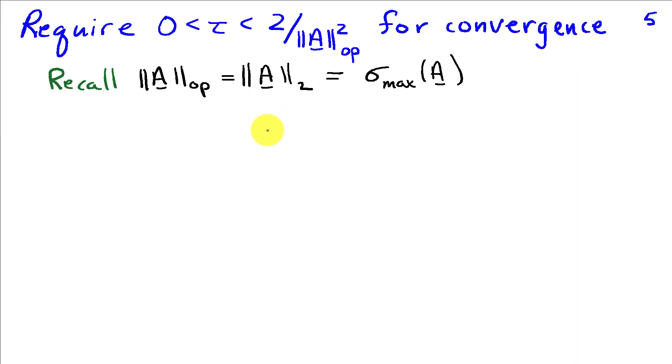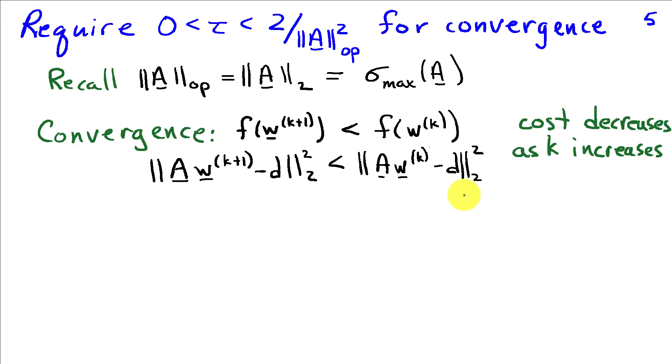So if we put bounds on tau, we can ensure that we will have convergence. Now the bounds that are relevant here end up being related to the operator norm of the matrix A. Recall that the operator norm is also known as the 2 norm, and it's the largest singular value of the matrix A. The idea of finding a step size that ensures convergence is to make sure that as you iterate with k, you always end up decreasing the value of the cost function. In other words, you always end up closer to the minimum. What you want to do is show that A wk plus 1 minus d, the 2 norm of the error at step k plus 1, is less than the 2 norm of the error at step k.